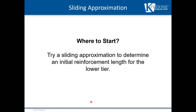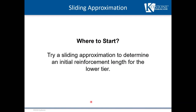So where do we start? We'll try starting with a sliding approximation to determine the lower tier reinforcement length. A sliding approximation can be used to estimate the reinforcement length of the lower tier. To do this, check sliding considering the reduced weight above the sliding plane — we don't have the full mass above this tier as we would with a full light wall, so we have a reduced weight.